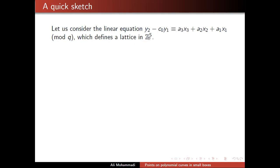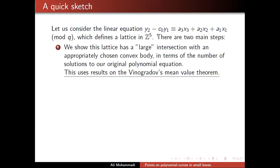This is a polynomial equation, but let's look at it as a linear equation — a linear mod q equation. This y², which originally had two variables, we've turned into five variables: x³, x², and so on. This linear equation defines a lattice in Z⁵. The proof has two steps: first, we find a convex body that nontrivially intersects this lattice defined by this equation, getting a good upper and lower bound for it.